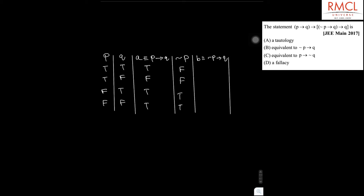Then there is a statement B which is equivalent to negation of P implies Q, and its truth values are: true, true, true, false.